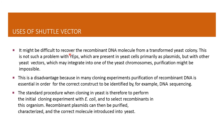Regarding the uses of shuttle vectors: it might be difficult to recover recombinant DNA molecules from a transformed yeast colony. This is not a problem for YEps, which are present in yeast cells primarily as a plasmid, but with other yeast vectors that may integrate into one of the yeast chromosomes, purification might be impossible. This is a disadvantage because in many cloning experiments, purification of recombinant DNA is essential for the correct construct to be identified — for example, by DNA sequencing. The standard procedure when cloning in yeast is therefore to perform the initial cloning experiment in E. coli, select recombinants in that organism, purify and characterize the recombinant plasmid, and then introduce the correct molecule into yeast.